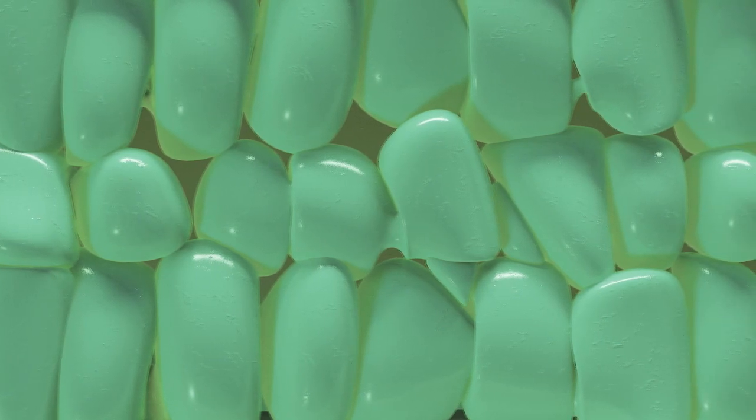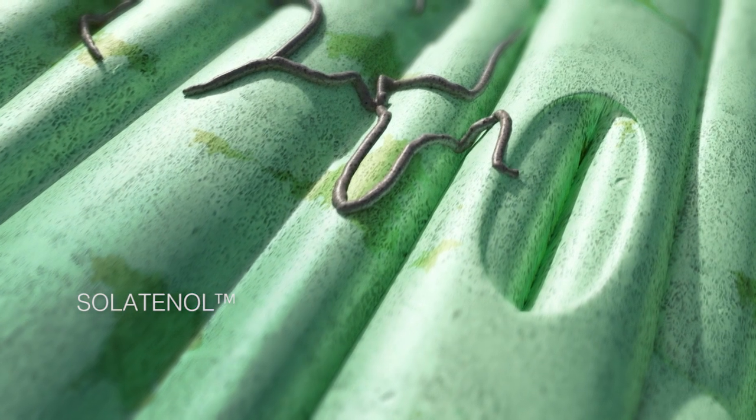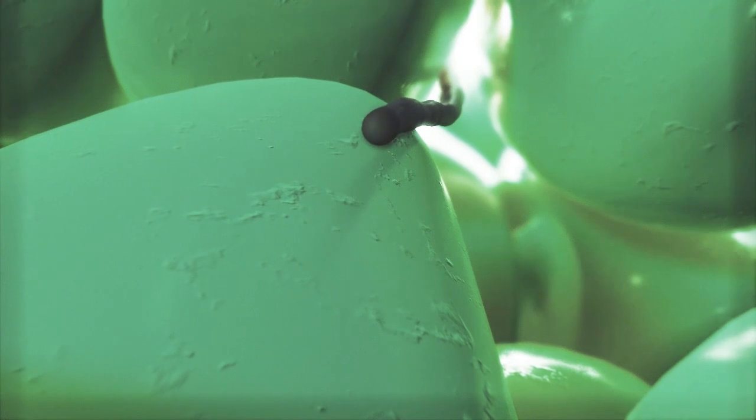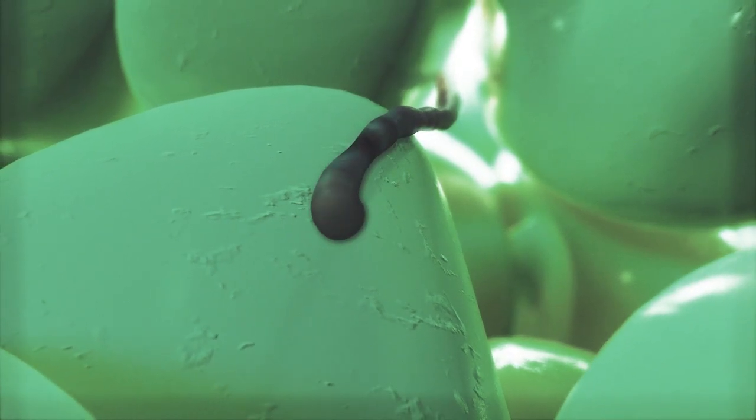Solatenol is absorbed by the developing hyphae through direct contact, either as it grows on the leaf surface or during its early growth inside the leaf tissue, after penetrating through the stomata.